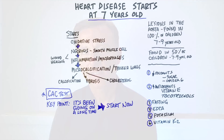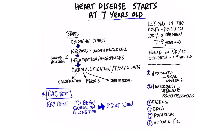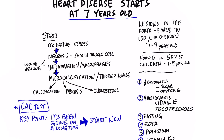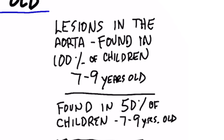What's really interesting is that heart disease starts when you're really young, like I'm talking seven years old. It's incredible. They have found lesions in the aorta in virtually 100% of children between the ages of seven and nine.